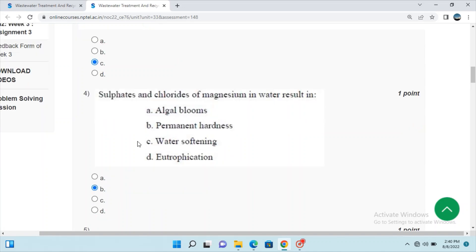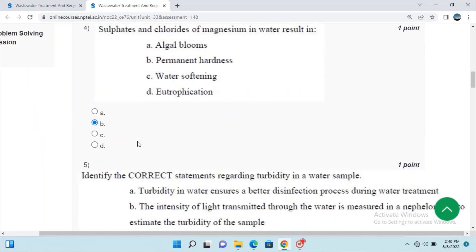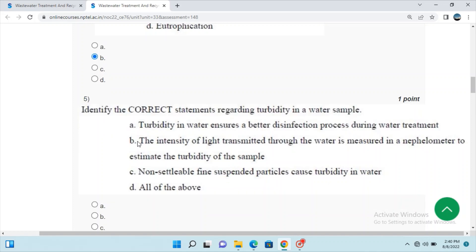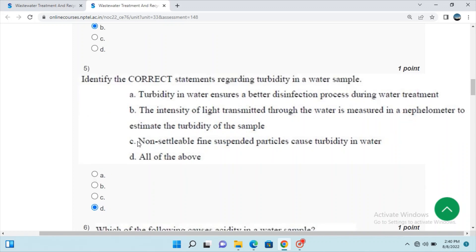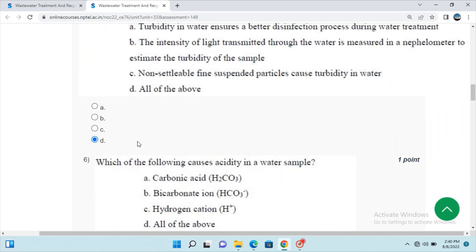Question 4: Sulfates and chlorides of magnesium in water result in permanent hardness. Identify the incorrect statements regarding turbidity in the water sample.